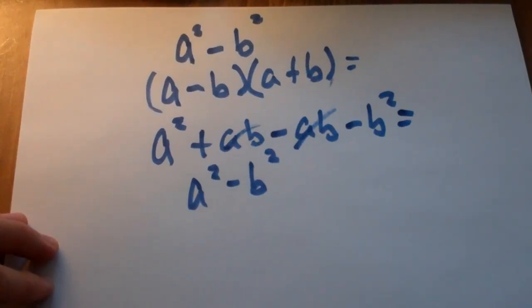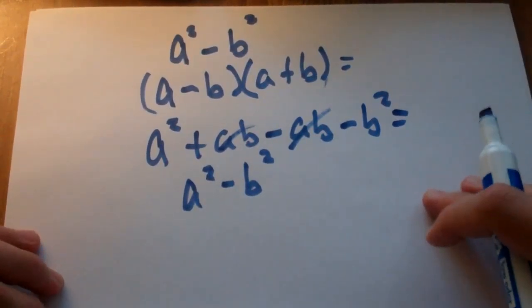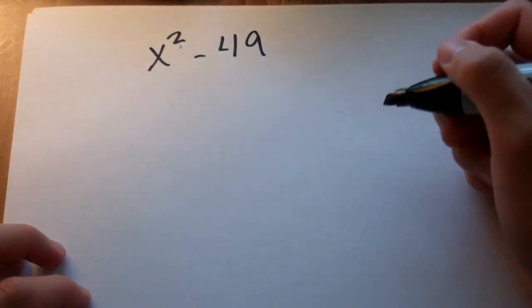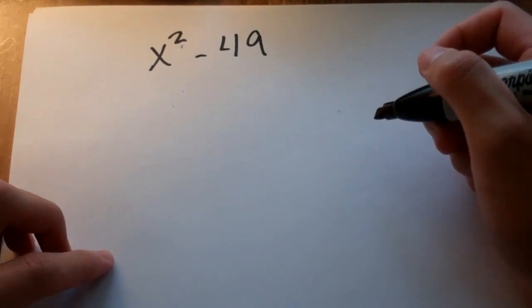Let's look at another one. Let's look at an actual example from a book. We have x squared minus 49. x squared minus 49.